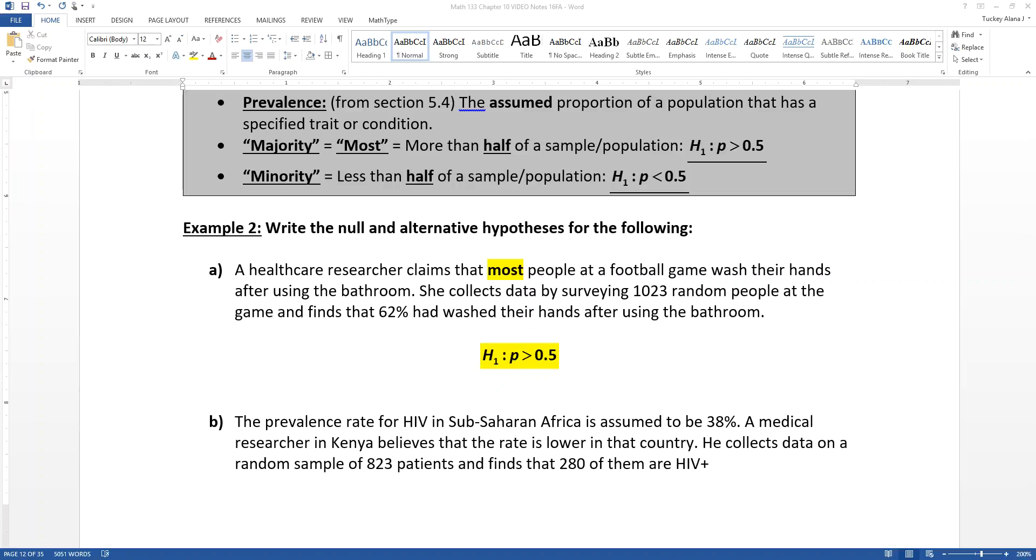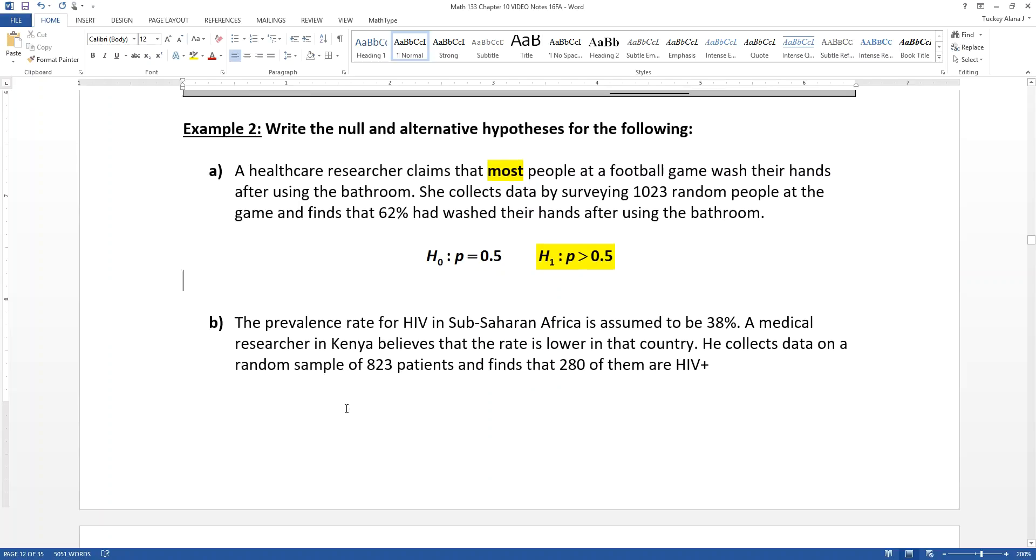That by default means that my null hypothesis, because the null hypothesis is always equality, it always has to be the equal sign. It has to be H0, it has to be the same parameter, which in this case is proportion because most implies more than 50% of the people. And it must be equal to 0.5, 50%.